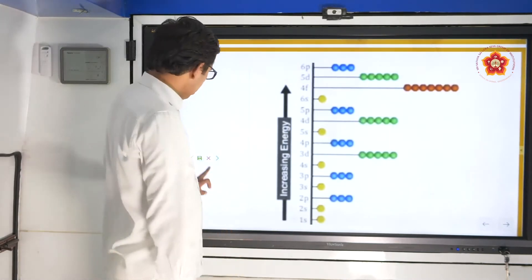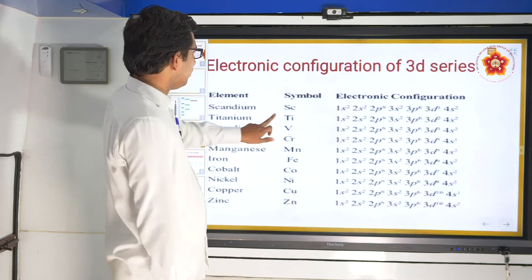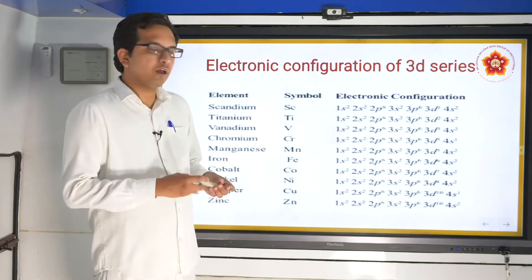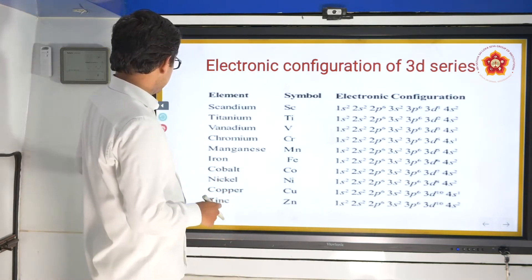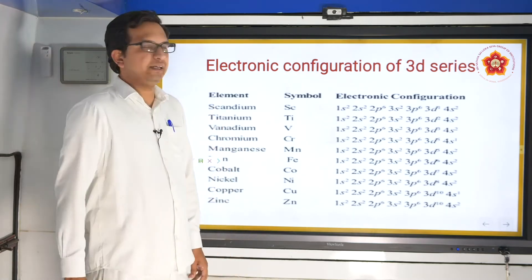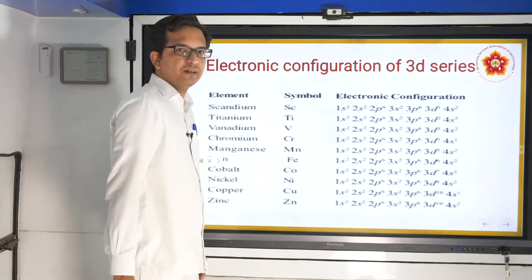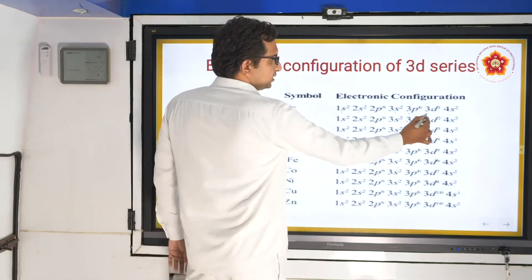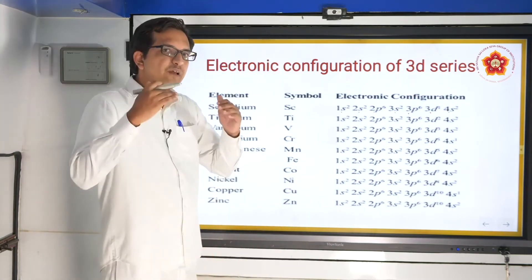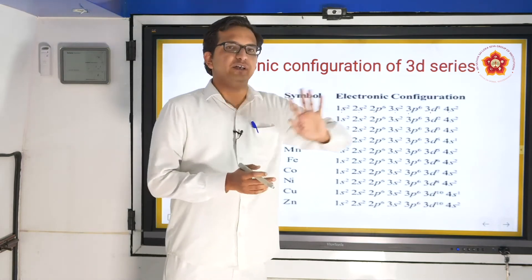Moving further, we will see certain electronic configurations of specific elements. For scandium: 1s², 2s², 2p⁶, 3s², 3p⁶, 3d¹, 4s². Though the filling of 4s occurs before 3d, we still write 4s after 3d when writing the configuration.